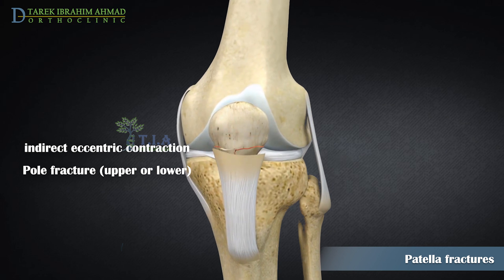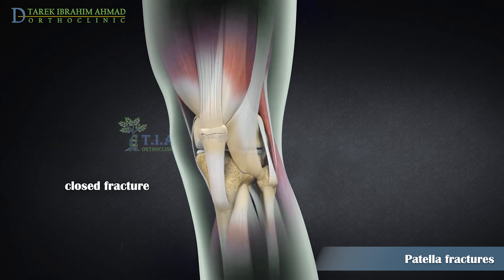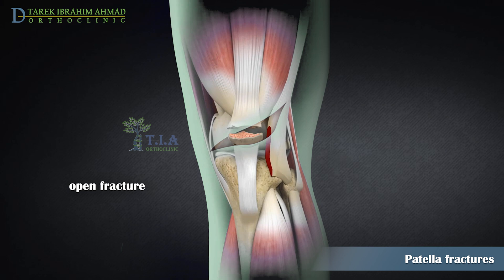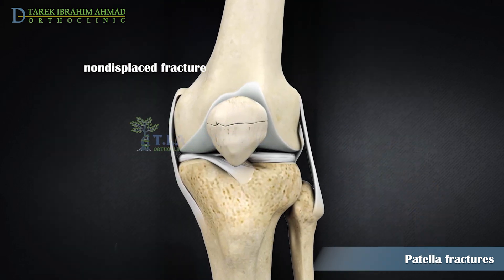Indirect trauma most commonly causes a transverse fracture, where the patella breaks into two pieces, but it can also lead to lower pole or upper pole avulsion fractures. A kneecap fracture is considered closed if the broken pieces of the patella do not pierce the skin. In a non-displaced fracture, the pieces of bone may remain in contact with each other or be separated by just a millimeter or two.